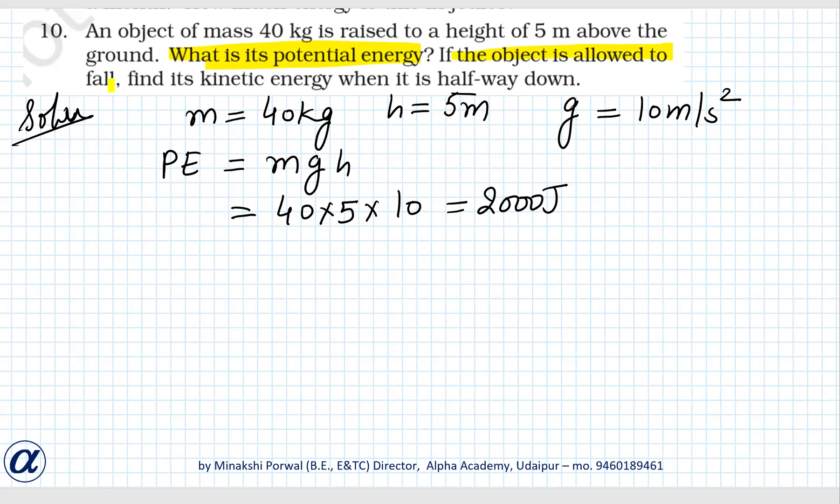Next is, if the object is allowed to fall, find its kinetic energy when it is halfway down. So basically our object is there, it is at a height of 5 meters from the ground. When it falls halfway down, we have to find its kinetic energy. That means it comes here, it covers 2.5 meters, and at this point we have to find its kinetic energy.